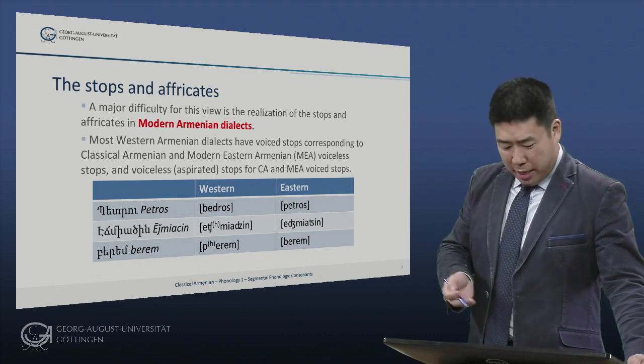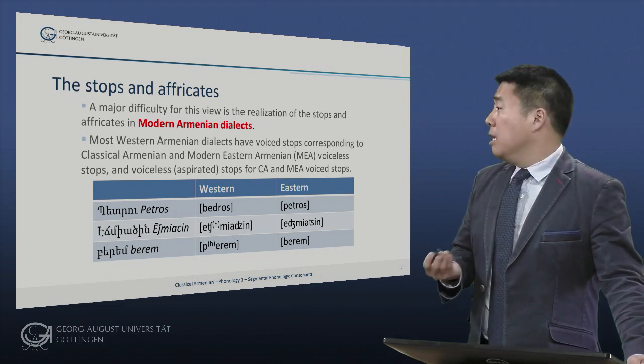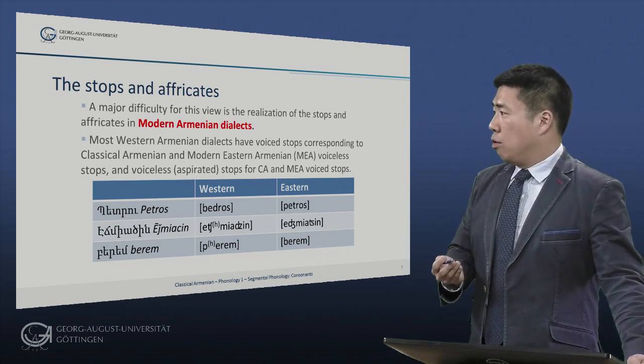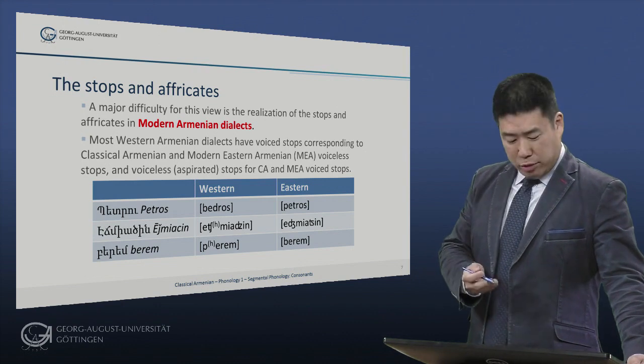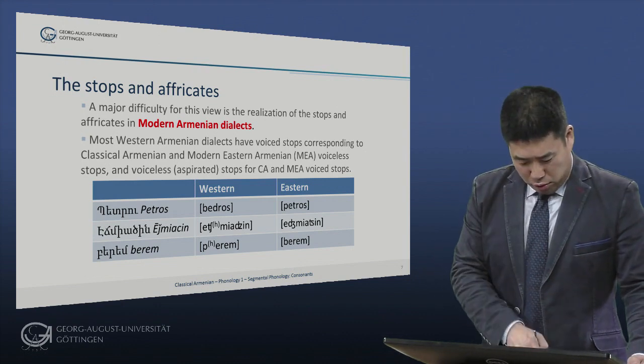This has many consequences. For example, the Christian name Peter, or Petros, is pronounced in Western Armenian as Bedros.